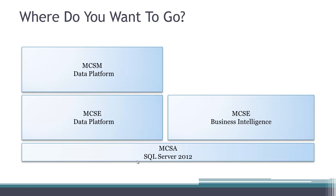Once you have the MCSA, you can move on to the other certifications, but you have to have that first as the foundation. The second level after MCSA is an MCSE, and at that point it splits into two different paths. One path is a data platform path, and the other path is business intelligence. You can choose to go down both paths, but they are separate and not related.